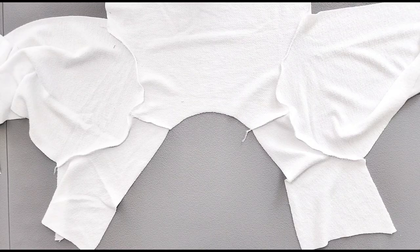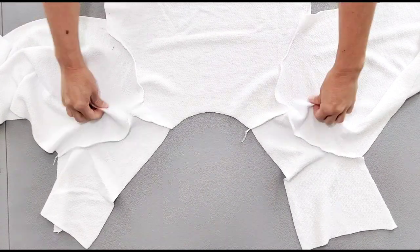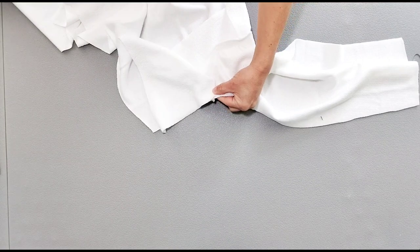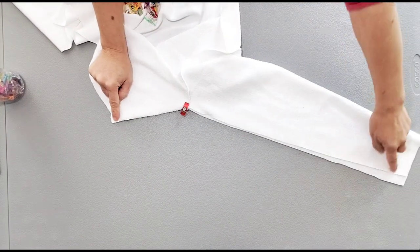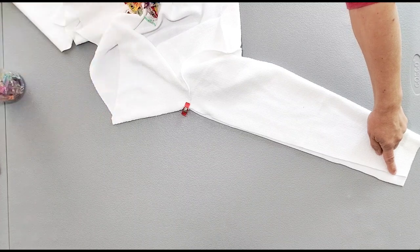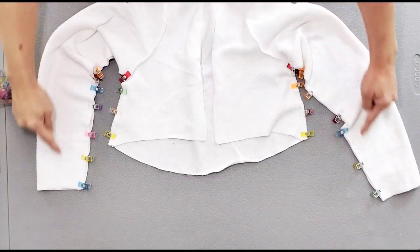After attaching the sleeves, match your side seams right sides together and pin matching your underarm seam, the bottom of your bodice, all the way to the bottom of your sleeve. Sew or serge both side seams.